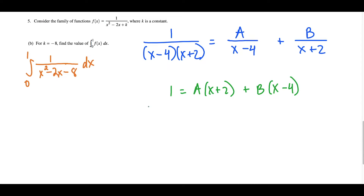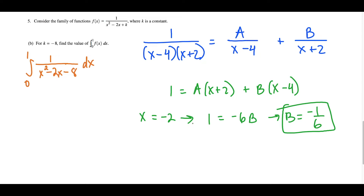Now we're going to plug in x equals negative 2 because it's going to get the first factor to cancel out completely. That gives us 1 equals A times 0 — which cancels — plus B times negative 2 minus 4, which is negative 6b. Solving for B, we get B equals negative 1 over 6. You strategically pick values of x that get these factors to cancel. The next x value is x equals 4, which gives 1 equals A times 4 plus 2, which is 6a. Solving for A, we get A equals positive 1 over 6.